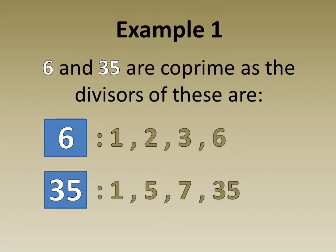In example 1, we see that 6 and 35 are coprime, as in the full list of their divisors, 1 is the highest common divisor.